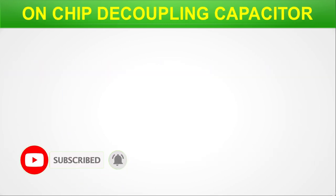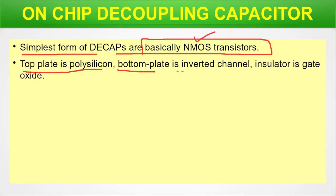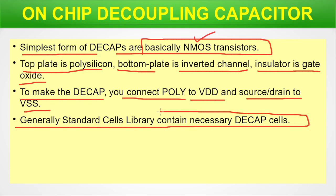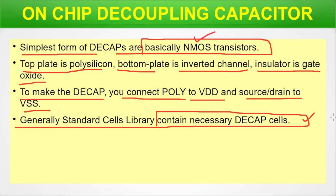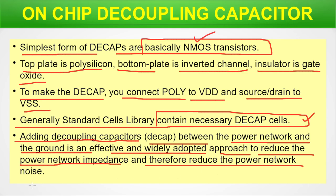On-chip decoupling capacitors. Now we are zooming into our focus on the decoupling capacitors used in VLSI design. The simplest form of DCAPs is generally the NMOS transistor. We build DCAPs using the NMOS structure — the top plate is polysilicon, the bottom plate is an inverted channel, and the insulator is the gate oxide. To make the DCAP, you connect poly to VDD and source/drain to VSS. Standard cell libraries contain pre-designed DCAP cells that you pick and use during your design.